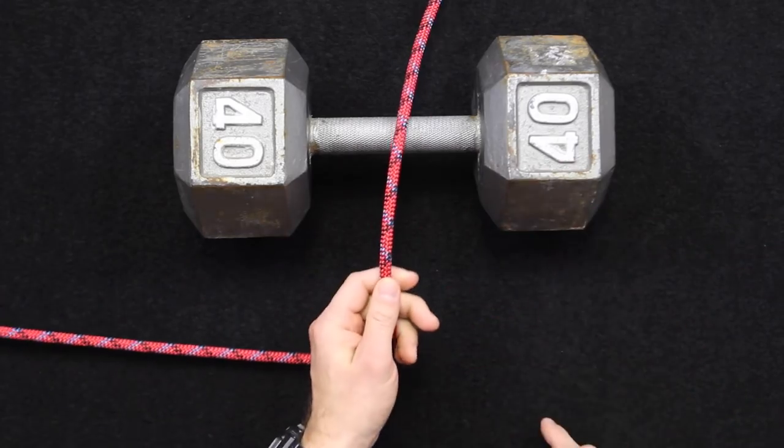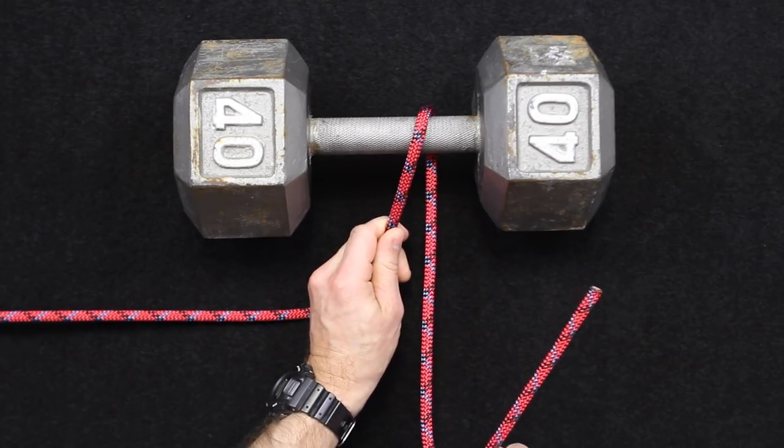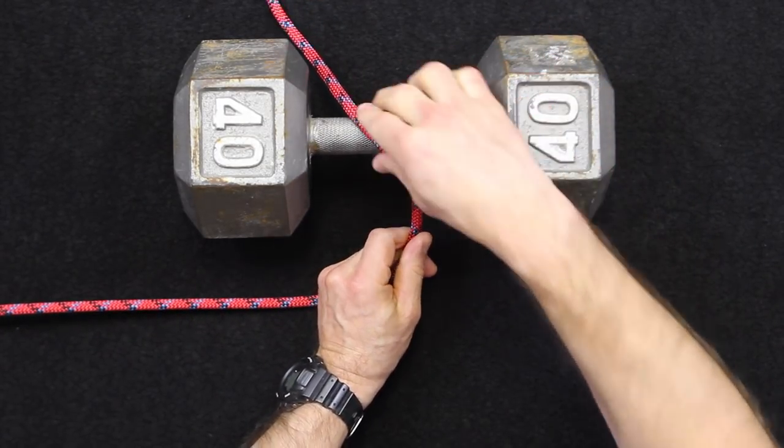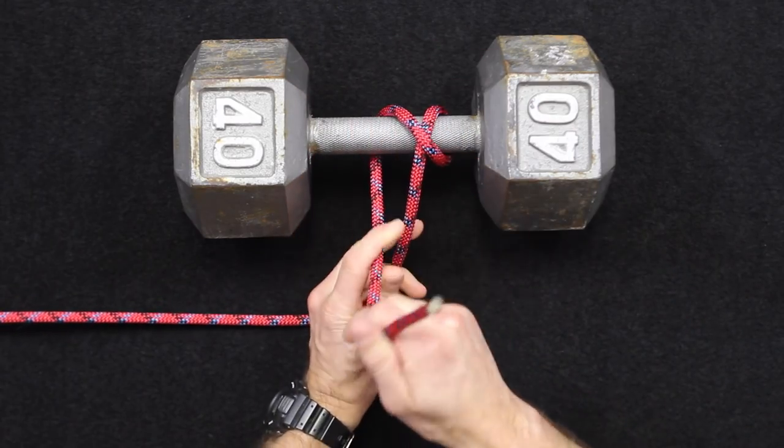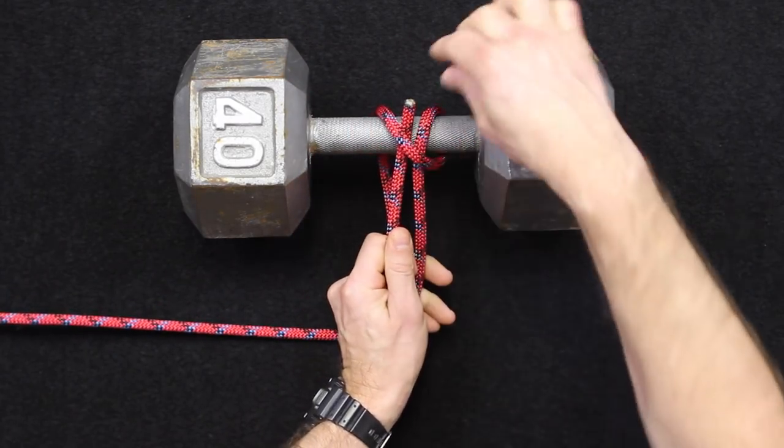First off, you're going to take the line across the post. You're going to wrap around the object, come across over the standing part of the rope, and back around the object one more time. And then tuck it underneath that crossover point.